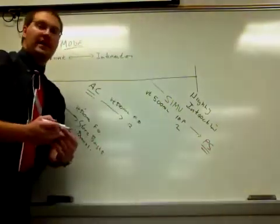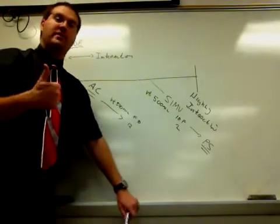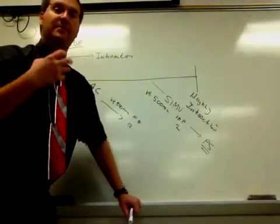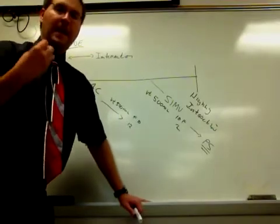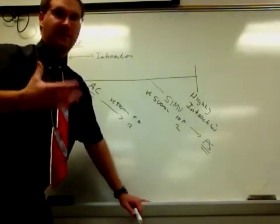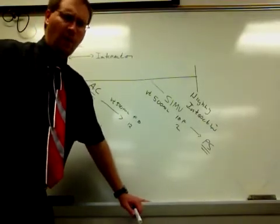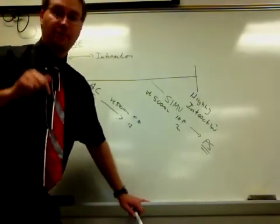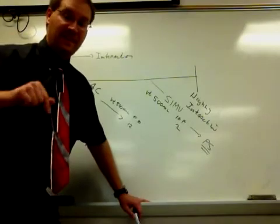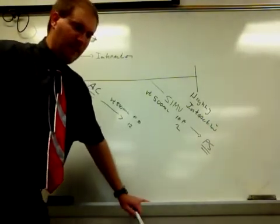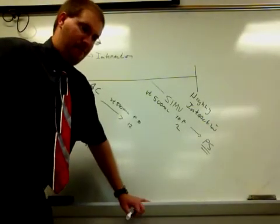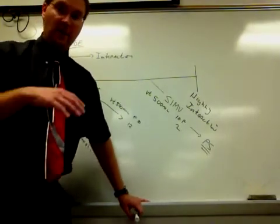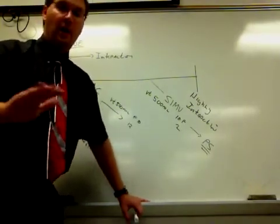Now there is a support or what we call an adjunct that we can add to SIMV called pressure support. What pressure support does is it helps to decrease the resistance that the patient has to breathe against in the tubing and it's basically a preloaded breath and it gives the patient a little bit of inspiratory pressure when they inhale.